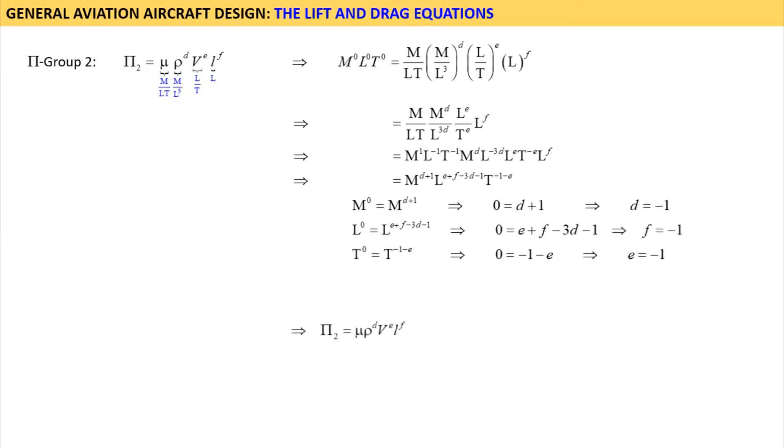Similar to our earlier action, we rewrite pi group 2 as shown here. Pi 2 was equal to mu times rho to the power D times V to the power E times L to the power F. Substitute the values of D, E and F leads to this, which can also be written as that. The inverse of this quantity is the expression for the well-known Reynolds number. Thus, in deriving the expression for the aerodynamic force, we have shown that it implicitly depends on the Reynolds number. This dependency is realized through surface friction, also called skin friction, whose magnitude depends, in part, on Reynolds number.